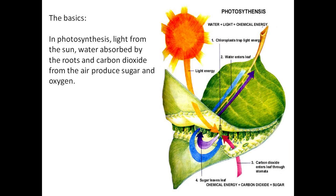In photosynthesis, light from the sun, water absorbed by the roots, and carbon dioxide from the air produce sugar and oxygen. The sugars produced are the plant's food.